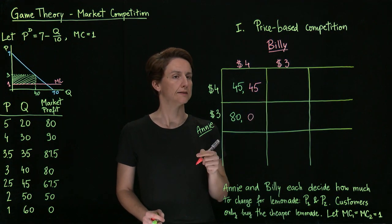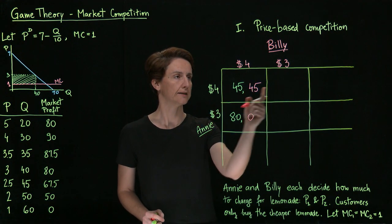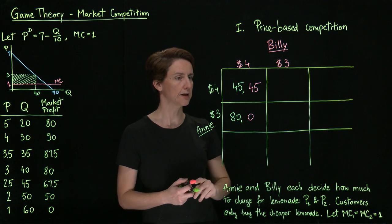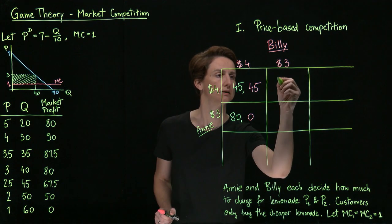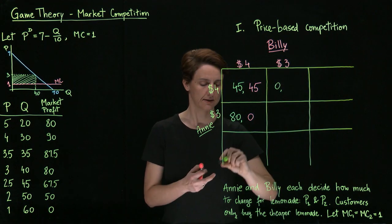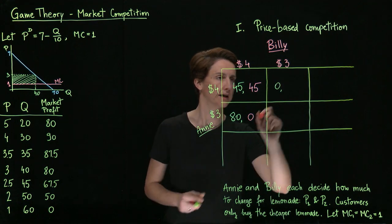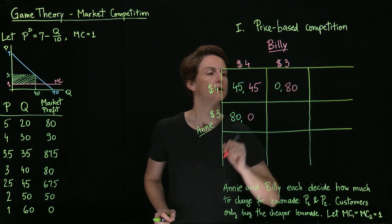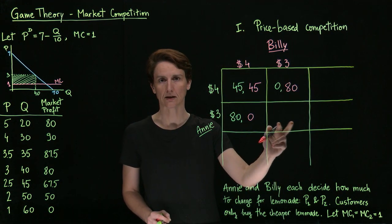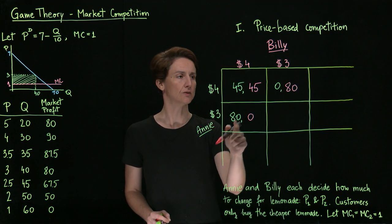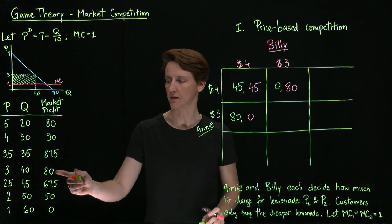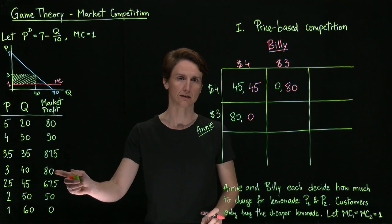If, on the other hand, Annie prices at $4 and Billy at $3, then her profit will be $0 and his profit will be $80. And if they both price at $3, then they will simply split that total market profit halfway.